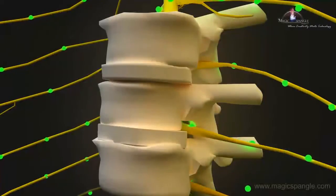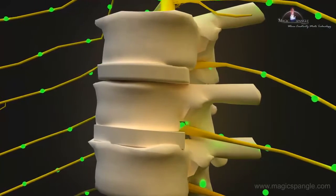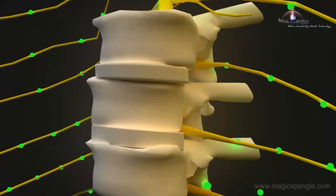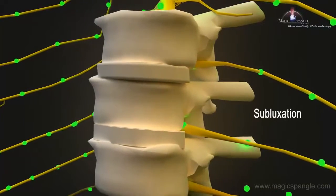However, from poor posture, falls, a car accident, or some other injury, your vertebrae can become misaligned. This misalignment is what chiropractors call vertebral subluxation complex, or just subluxation.